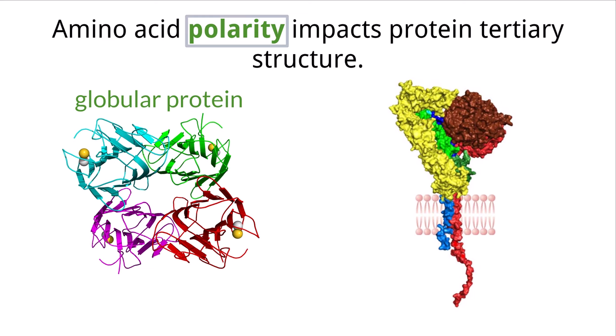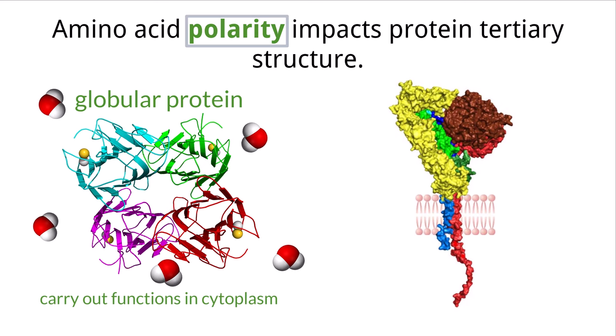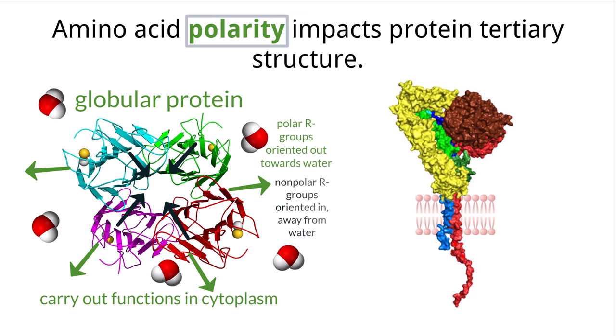Many of these proteins carry out functions within the cytoplasm, which is a water-based solution. To achieve this tertiary shape, the polar amino acids are oriented towards the outer part of the sphere that comes in contact with water, which is perfect because the water is also polar, and the nonpolar amino acids clump together in the middle of the structure where they are away from water. These interactions therefore directly impact the final shape of the protein, making it that globular shape.